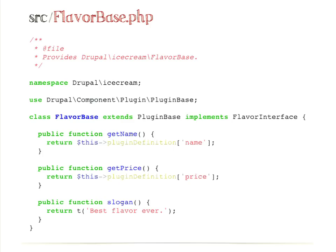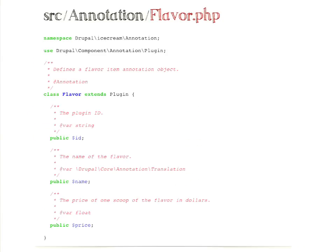We're nice developers, so we provide a base class to make it easy for others to create new flavors for our ice cream store. The base class extends PluginBase — which provides things like a get_id method and other basics common to all plugins, meaning any plugin manager can assume any plugin in Drupal has a get_id method it can call. We implement the interface and provide default behavior for get_name, get_price, and slogan by reading the information that was provided in the annotation. So if you put name and price in the annotation, the base class can provide those values by default.